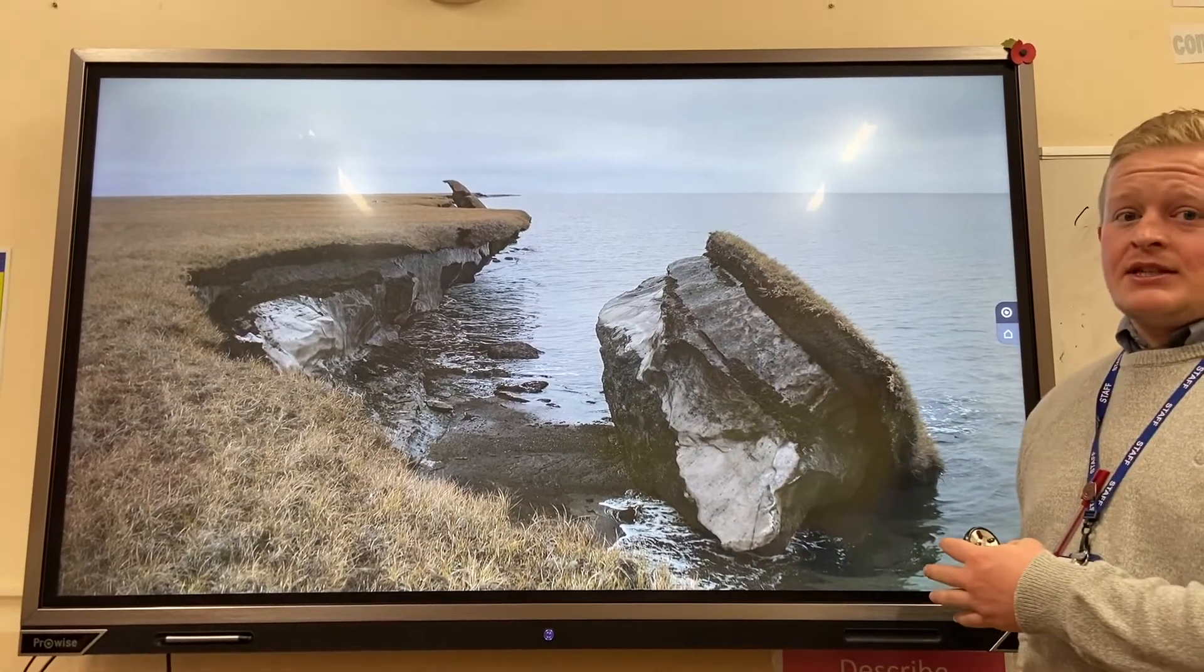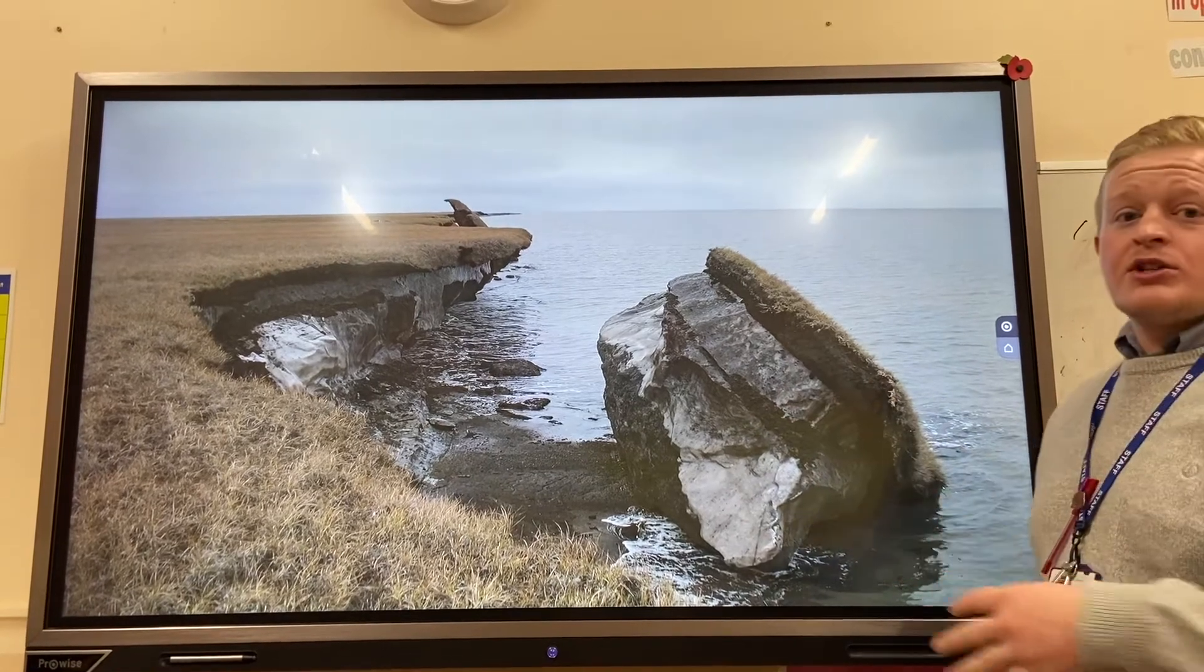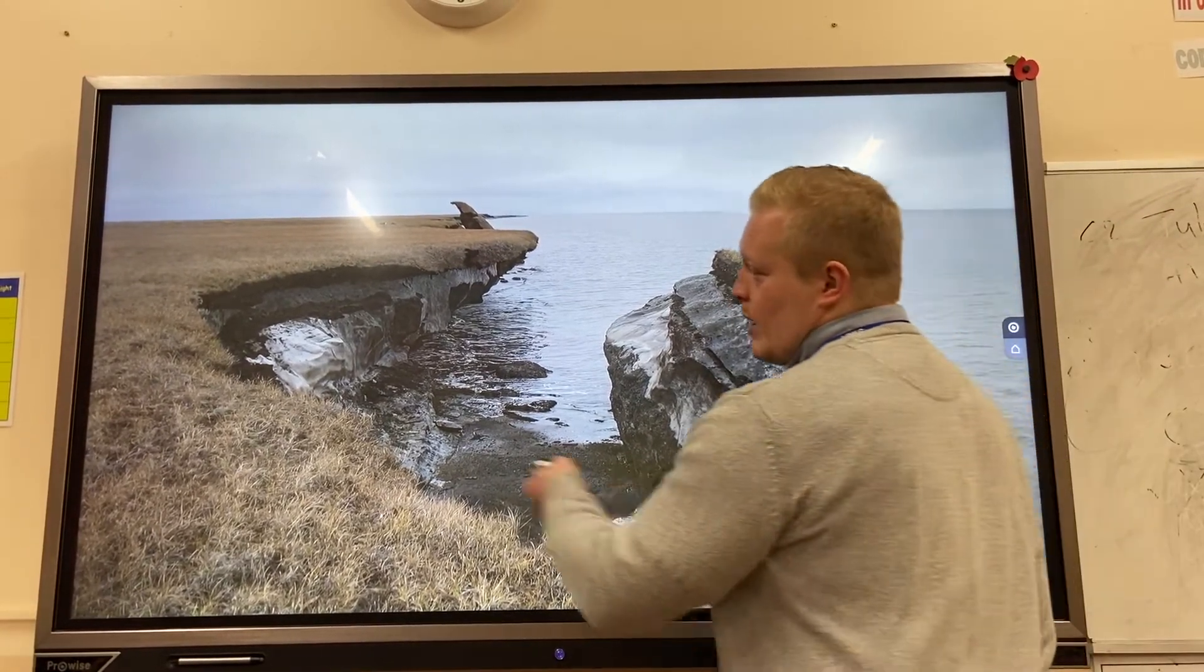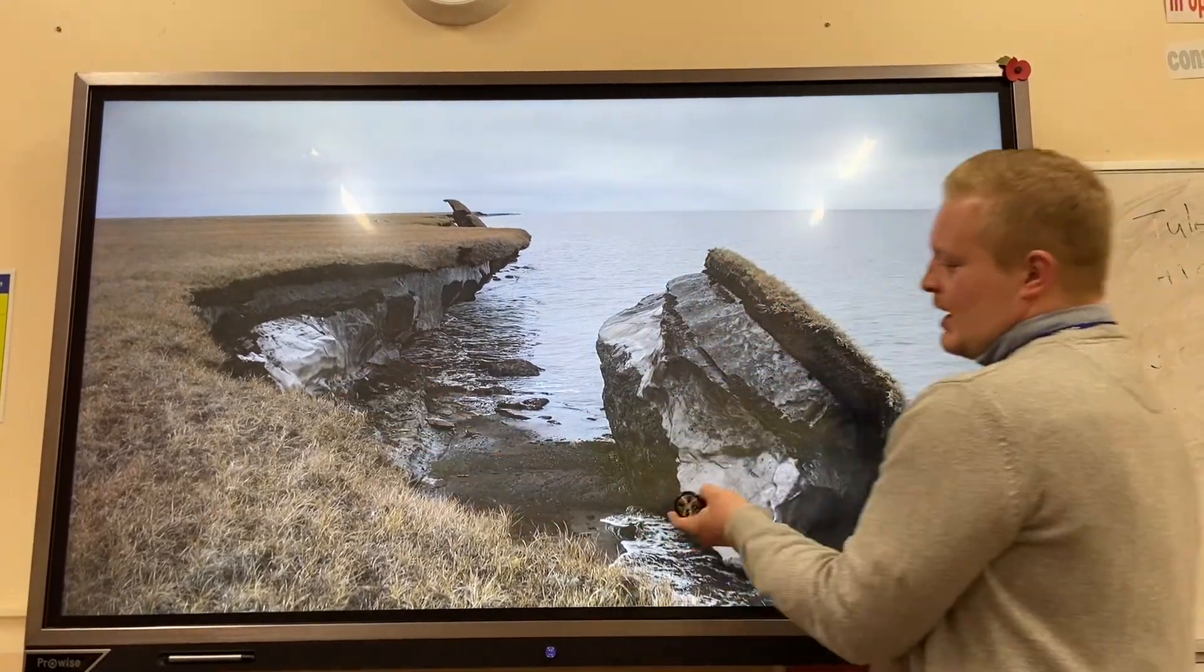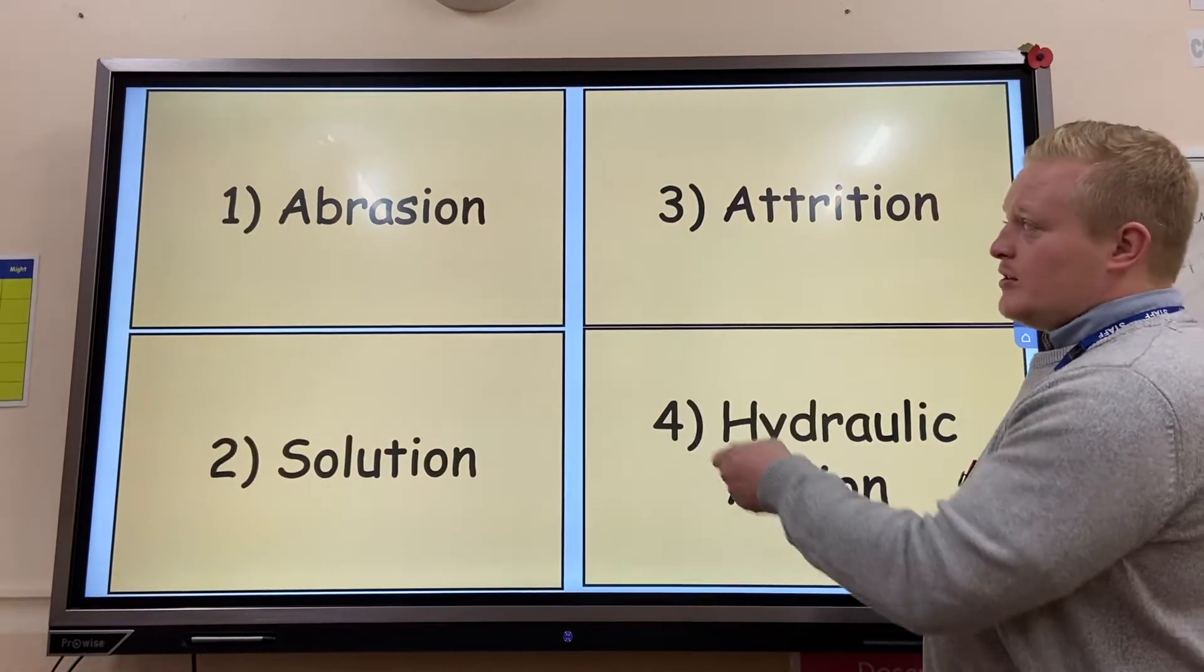As you can see here, something's happened to this bit of coastline. This bit of cliff has detached itself because of our different marine processes, our four different types of erosion. As you can see, we've got a wave cut notch that has been created and the wave cut platform. Our four different types of erosion we start off with: